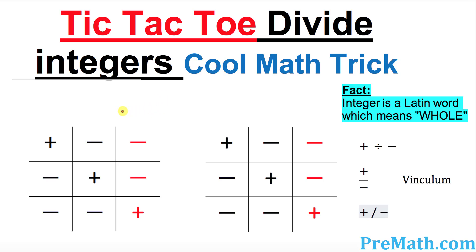Let's go ahead and look at this very first example. You can see that we have placed all positive and negative signs in this tic-tac-toe. On the main diagonal you can see only the positive signs, and the rest are negative signs. Now the next thing we're going to see is how these positive and negative signs are going to behave when it comes to dividing them.